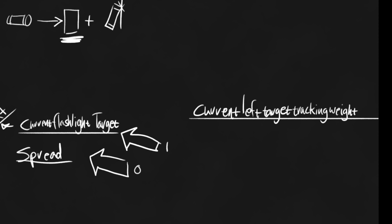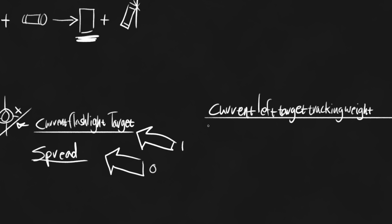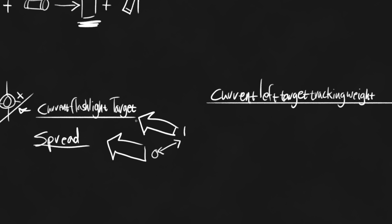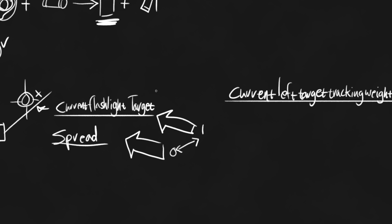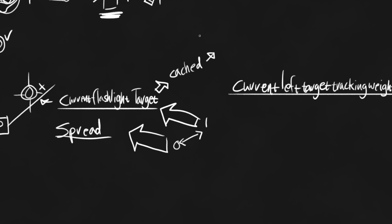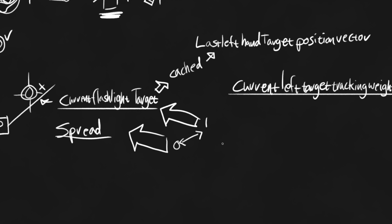We're going to have a variable called the current left target tracking weight, and we're going to be adding to it anytime we have a current target. If we don't have a current target, we're going to be subtracting from it, then lerping between these two based off of that value. For this to work, we're actually going to have to cache this variable so that when this thing goes null, we can still blend out back to our normal variable — stored in local space to the camera so we can get it afterwards.